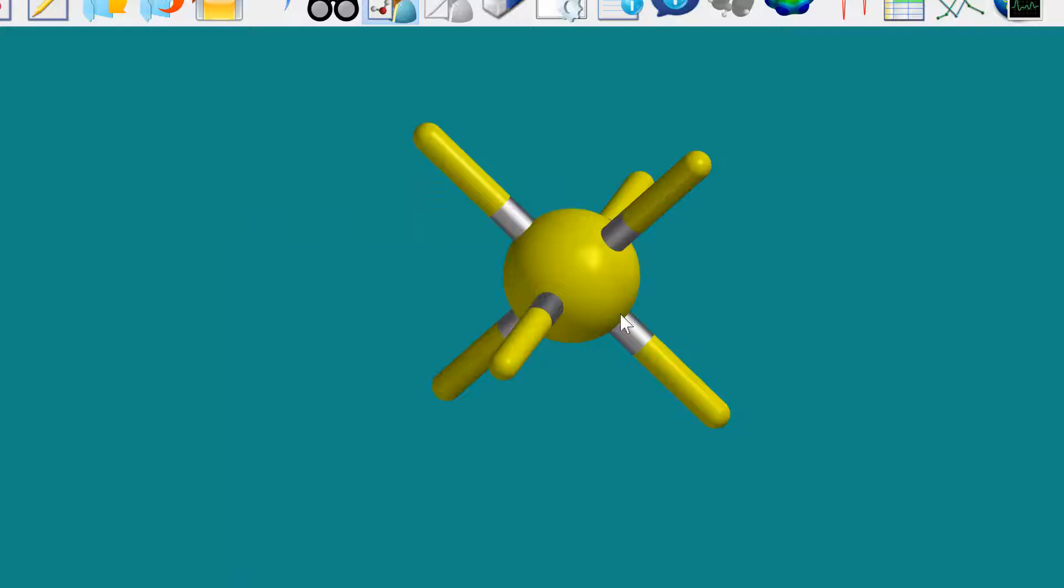You can do the same thing with an octahedral arrangement. So here we have something like sulfur hexafluoride, SF6. You can see all the bond angles there are 90, right? No matter which way you go. And if you deleted any one of these, now you have a square pyramid. And then if you get rid of the one opposite of where you just lost the other one, now you have a square planar. So those angles are all 90.